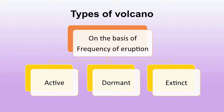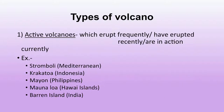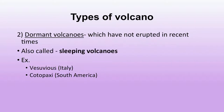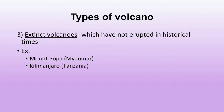On the basis of frequency of eruption, volcanoes are of three types. Active volcanoes erupt frequently or have erupted recently — examples are Stromboli, Krakatoa, Mayon, Mauna Loa, and Barren Island in India's Andaman and Nicobar Islands. Dormant volcanoes have not erupted in recent times and are also known as sleeping volcanoes — examples are Vesuvius and Cotopaxi. Extinct volcanoes have not erupted in historical times — examples are Mount Popa and Mount Kilimanjaro.